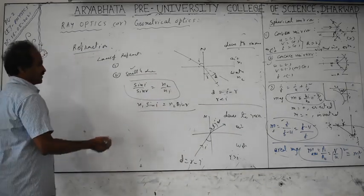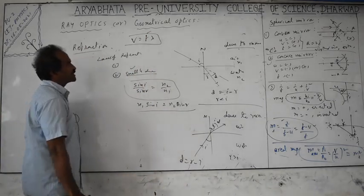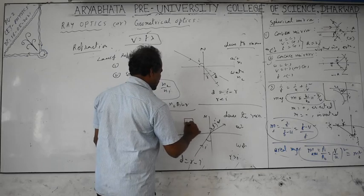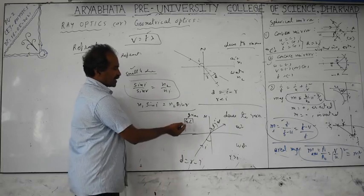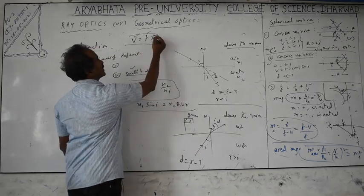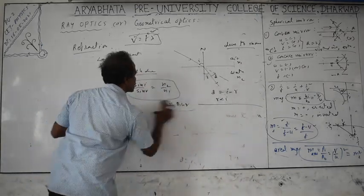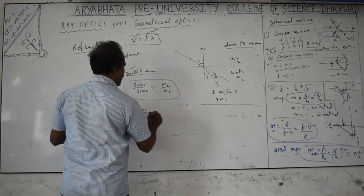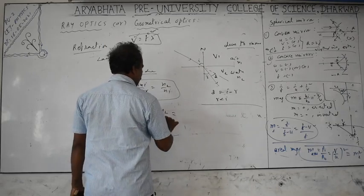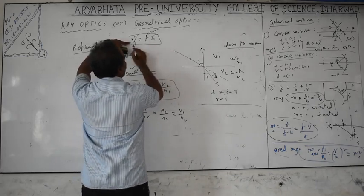During refraction, frequency remains constant — the color of light depends only on frequency. Even though velocity and wavelength change when light goes from one medium to another, frequency stays the same. So if you see a green flag from underwater, it still appears green. Using v = f·λ: v1 = f·λ1 and v2 = f·λ2. Since frequency f is constant, v1/v2 = λ1/λ2. Snell's law: n2/n1 = v1/v2 = λ1/λ2.